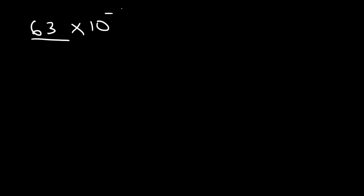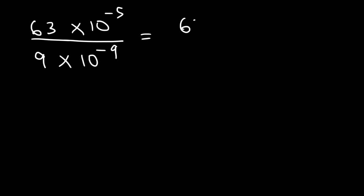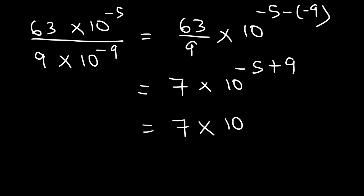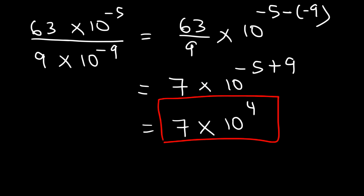Here's another example: 63 times 10 to the negative 5 divided by 9 times 10 to the negative 9. Divide 63 by 9, then subtract the exponents — the top number minus the bottom number. 63 divided by 9 is 7. Negative 5 minus negative 9 is negative 5 plus 9, which is the same as 9 minus 5, giving positive 4. So the answer is 7 times 10 to the positive 4.